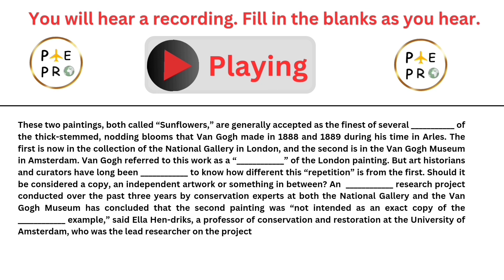Van Gogh referred to this work as a repetition of the London painting, but art historians and curators have long been curious to know how different this repetition is from the first — should it be considered a copy, an independent artwork, or something in between? An extensive research project conducted over the past three years by conservation experts at both the National Gallery and the Van Gogh Museum has concluded that the second painting was not intended as an exact copy of the original.